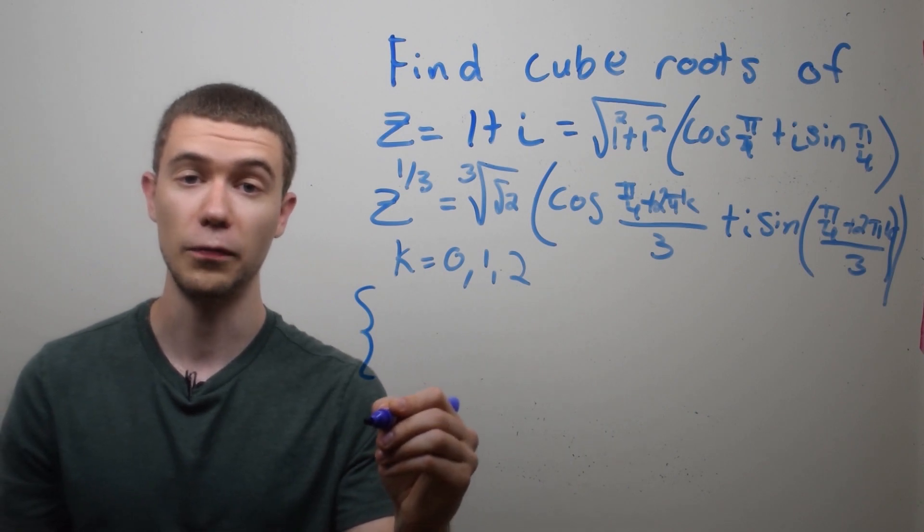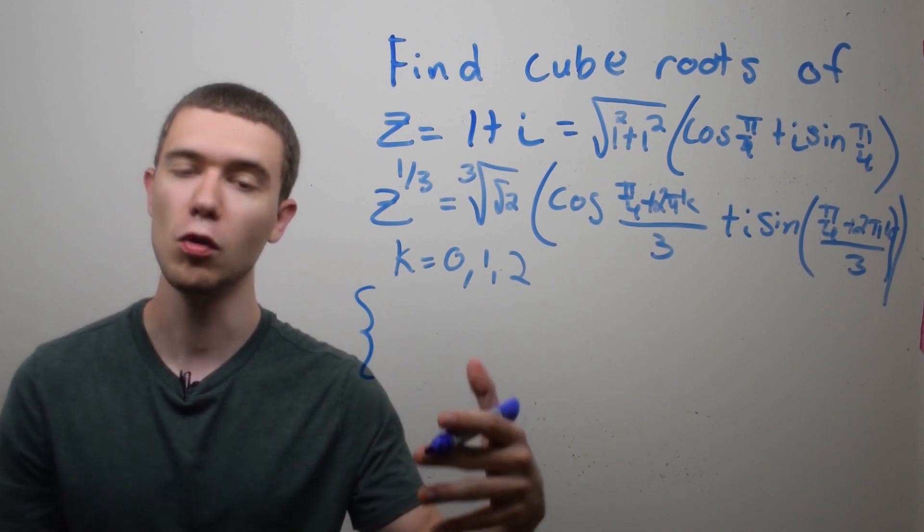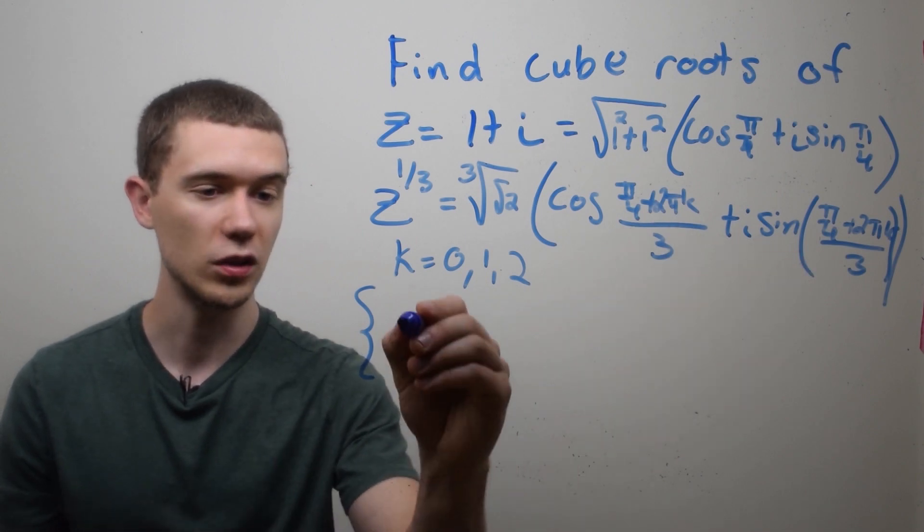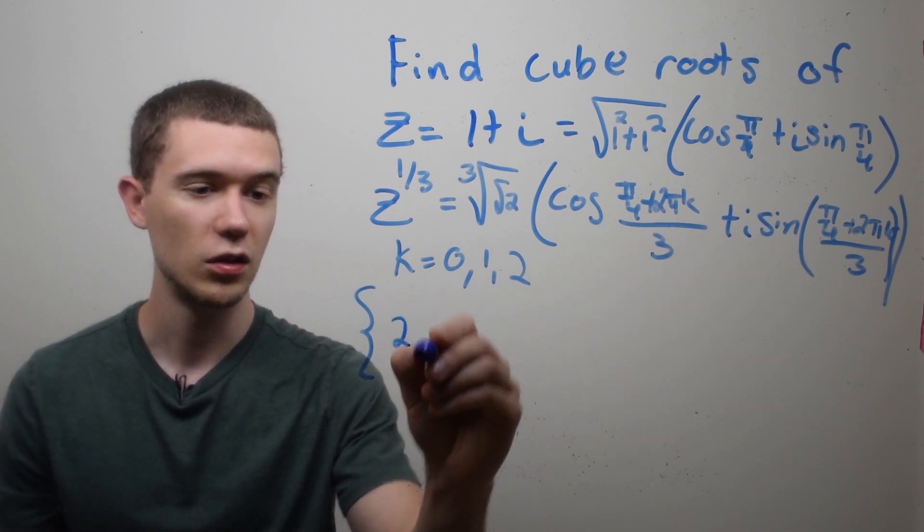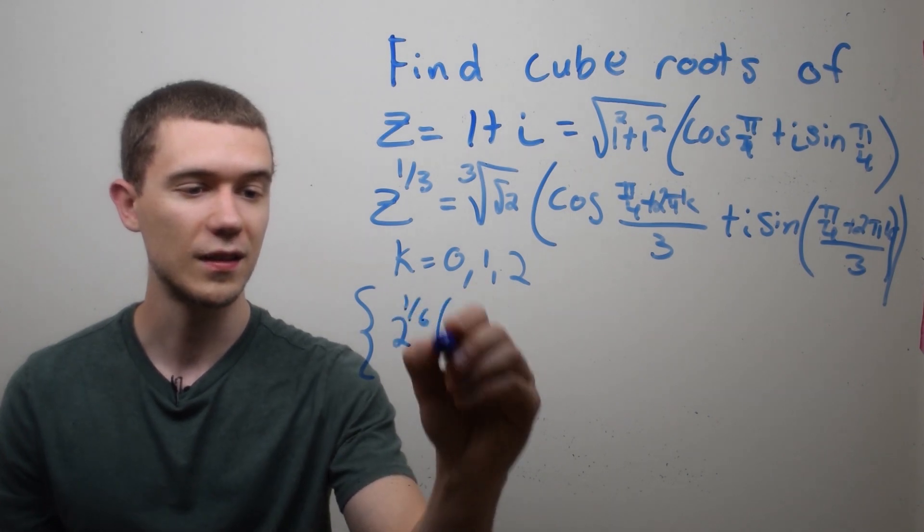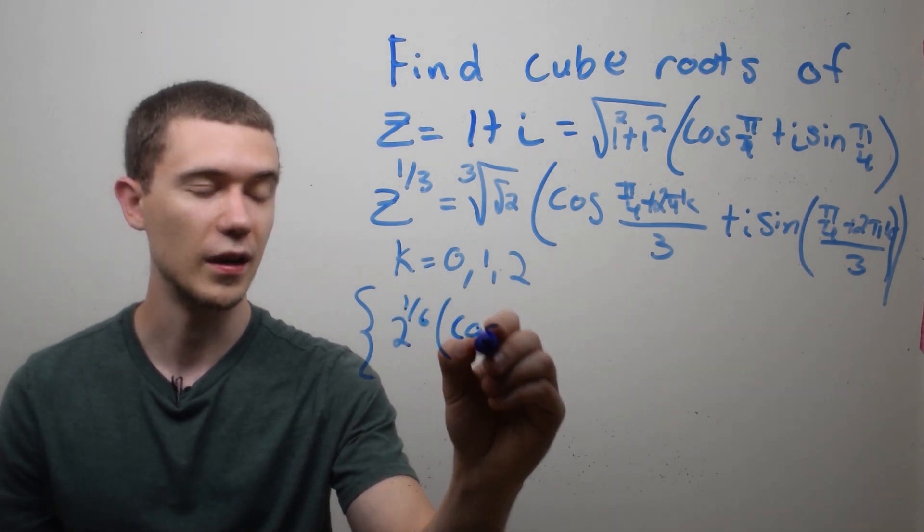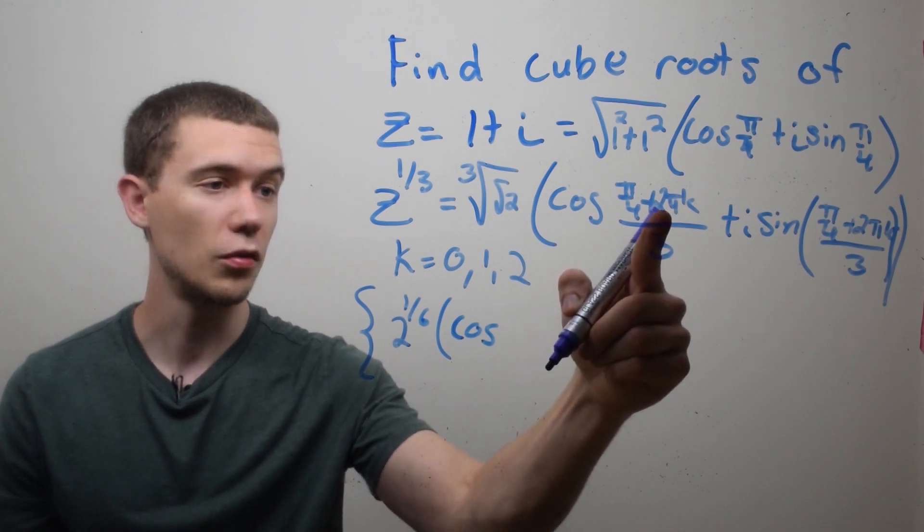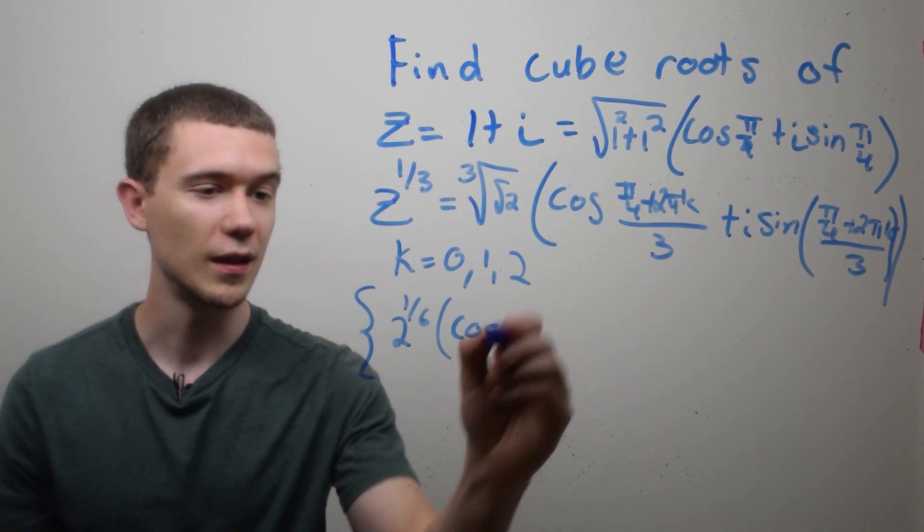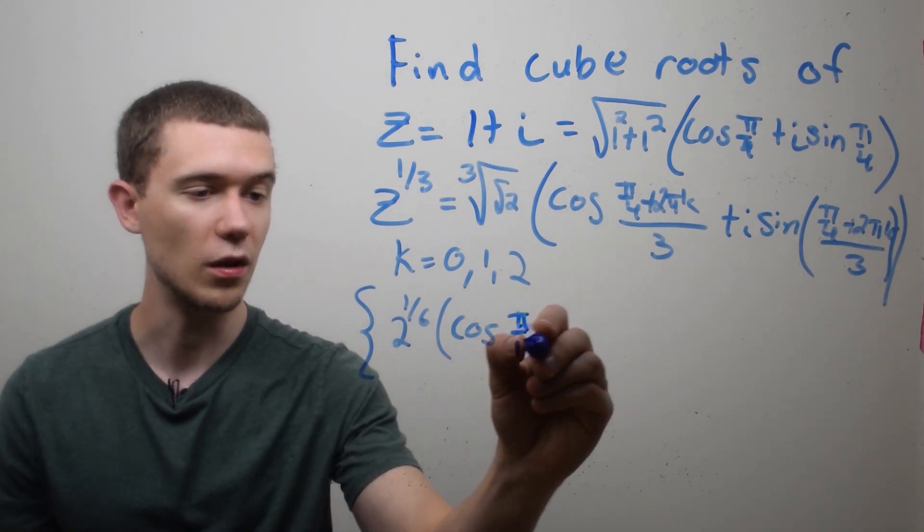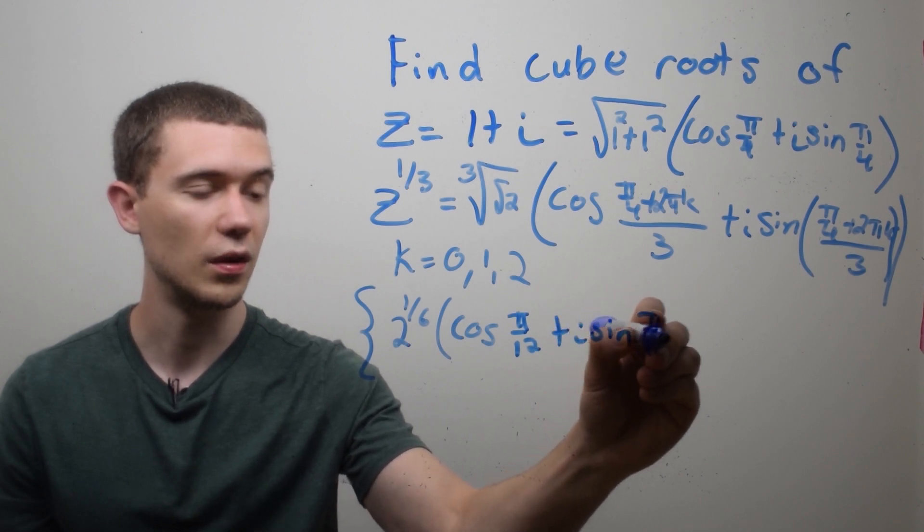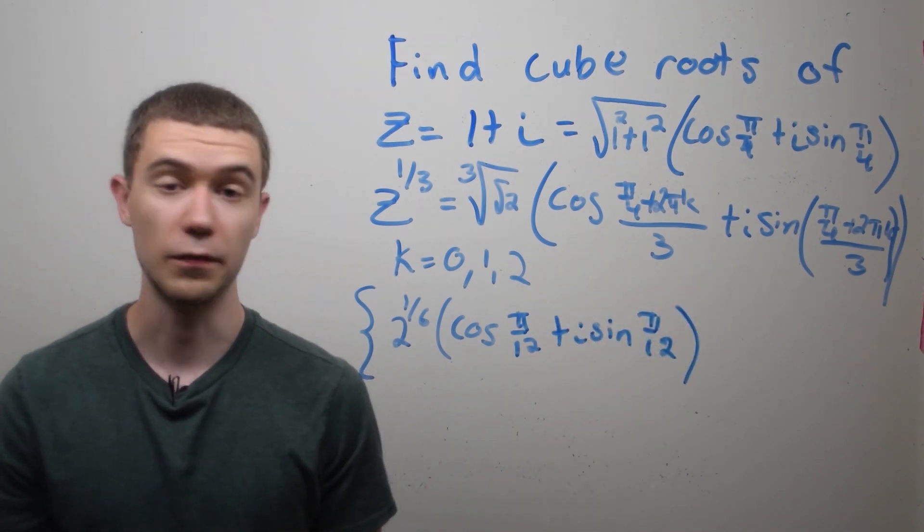And I'm going to write the first one first. So k equaling 0. Remember, that's the principal root. So if I plug 0 into this equation, let's see, we'll get 2 square rooted, cube rooted will be 2 to the sixth times cosine of, I'll plug in 0 for k. That would be pi over 4 divided by 3. That's going to be pi over 12 will be the argument, plus i sine of pi over 12. That's the first one.